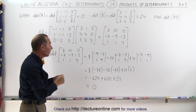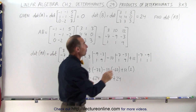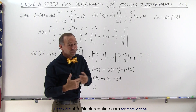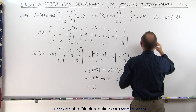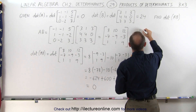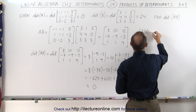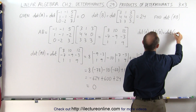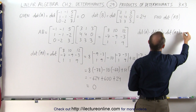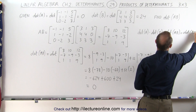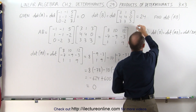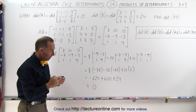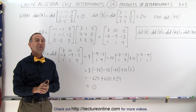What we didn't show you in this video is that if you take the determinant of B times A, you should also get the very same result. You may want to try that and see if it works. You'll find that the product of the determinant of A multiplied times the determinant of B is equal to the determinant of AB, which is equal to the determinant of BA. And it doesn't matter if it's a 2x2, 3x3, or 4x4 matrix — that will always be the case.